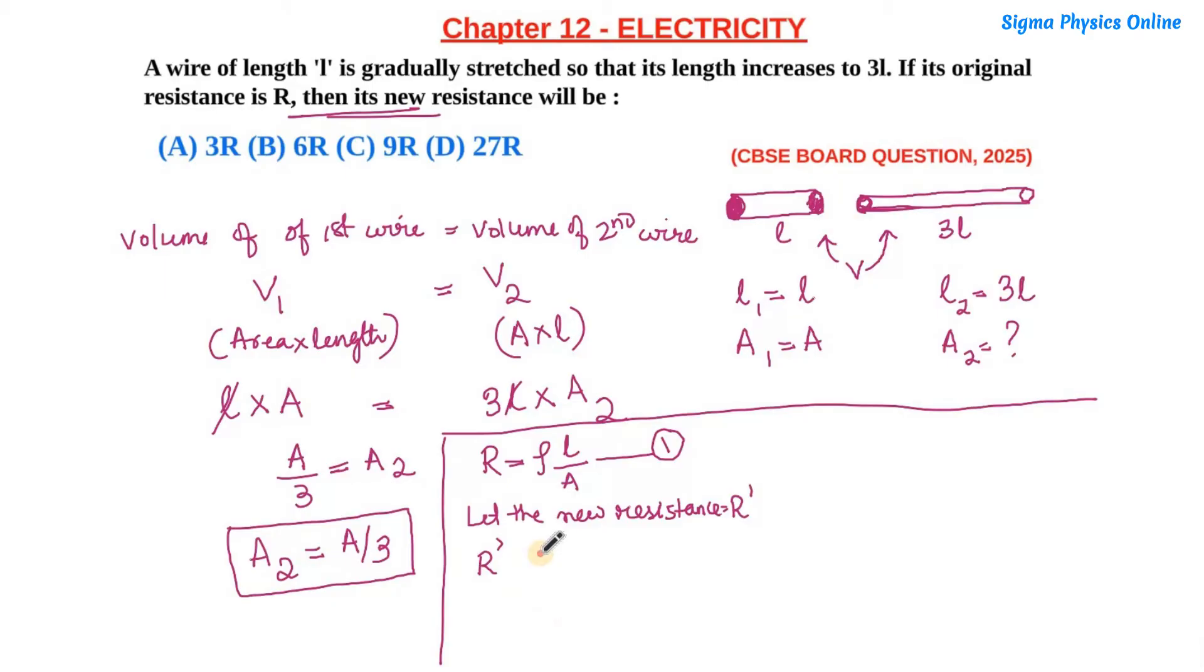We have l₂ = 3l and A₂ = A/3. So we can rewrite this equation as R' = ρ × 3l / (A/3). The 3 in the denominator comes to the numerator, so it becomes ρ × 3l × 3 / A, which is 9ρl/A.